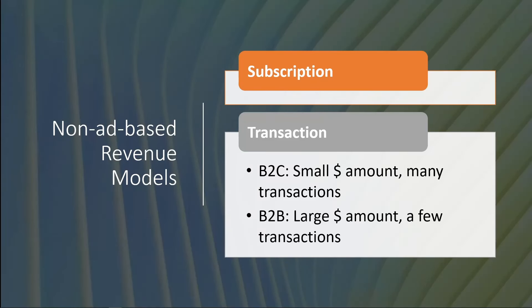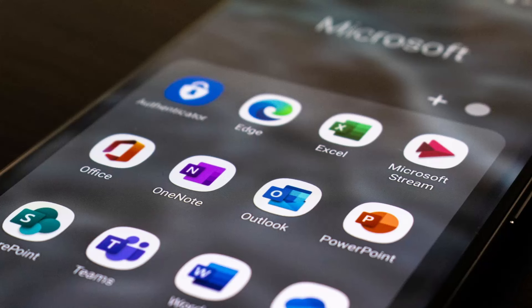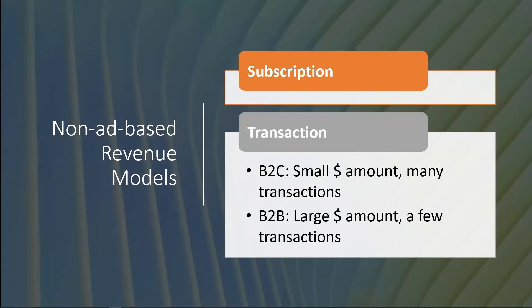Now let's take a step back. In the previous lecture, we talked about advertising as a revenue-generating model. Now let's look at the non-advertising-based revenue-generating models. There are generally speaking two types. First is subscription — examples include Netflix, Office 365, cloud-based storage, and Amazon Prime, among others.